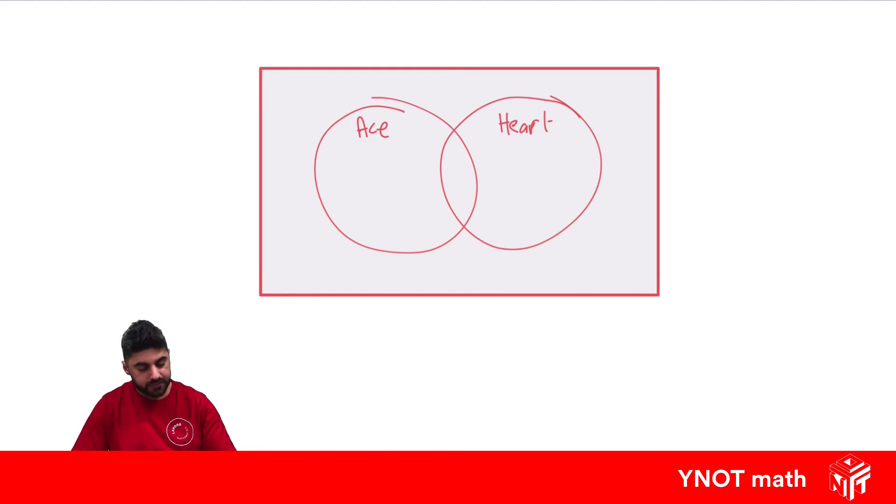Now over here, we know that there's four hearts, we know there's four aces in a deck. So we know there's got to be four things included in this circle, but we know one of those is the ace of hearts. So the ace of hearts is the thing that overlaps both categories. So in here, we have the ace of hearts, and there's only one of them, so we'll put a number one.